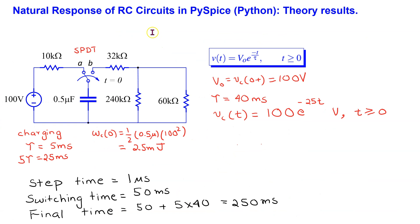Let us consider a natural response example first. This solution is taken from another video in this channel. In this given circuit, the switch is in position A for a very long time. The charging time constant is 5 milliseconds. Thus, it takes at least 25 milliseconds for the capacitor to fully charge to 100 volts. After switching occurs, the discharging time constant is 40 milliseconds. For this transient simulation, we can select step time as 1 microsecond, set the switching time to any time greater than 25 milliseconds, say 50 milliseconds, and set the final simulation time to 250 milliseconds.